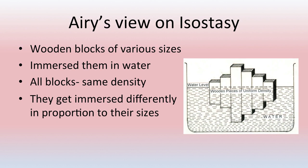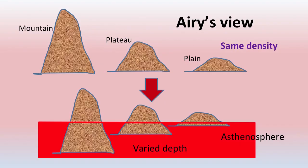Airy used wooden blocks to explain his viewpoint. Wooden pieces of uniform density were dipped in water, and according to Airy all the blocks had the same density, so they got immersed differently in proportion to their sizes — longer columns were immersed more into the water while shorter columns had lesser depth. Applying this to the earth surface, mountains go deeper into the asthenosphere than plateaus, and plateaus deeper than plains.